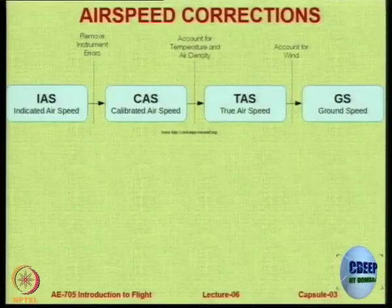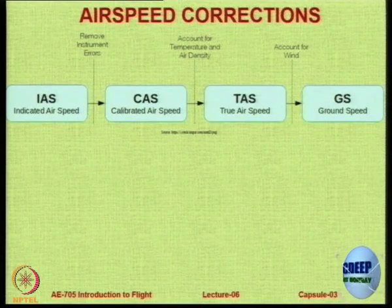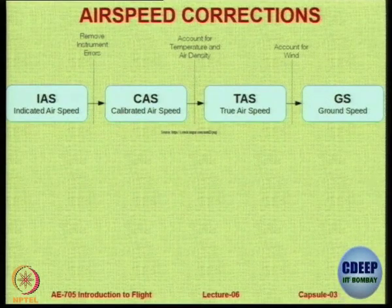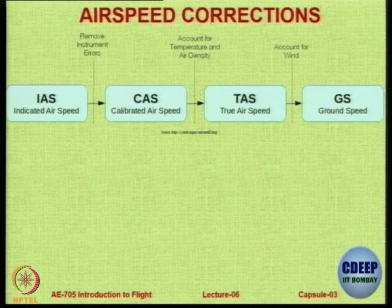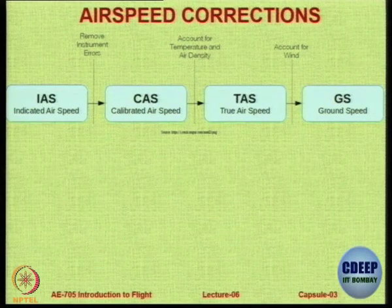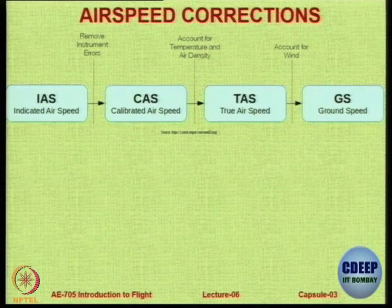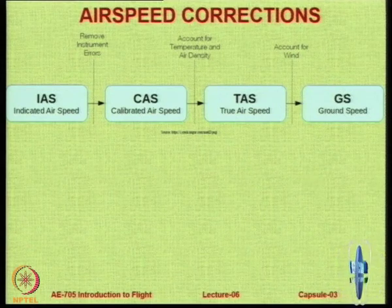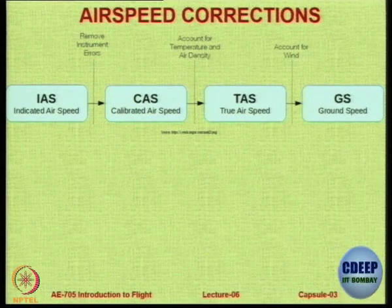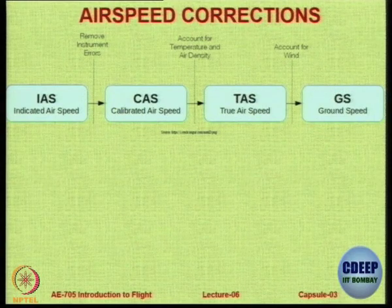Let us see the corrections. There is something called indicated airspeed. The indicated airspeed is what the pilot sees in the instrument. It could be zero, it could be infinity. Suppose the tube is broken, suppose the needle is jammed — the needle which is supposed to move has a breakage and now it has fallen to zero. Whatever speed you fly it will show zero. If the instrument is faulty, if the instrumentation has got some mechanical or electrical disconnection, it will show zero, because it is not sensing anything — it is not working basically.